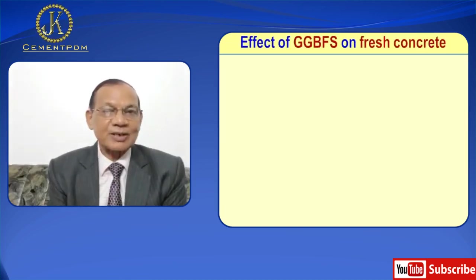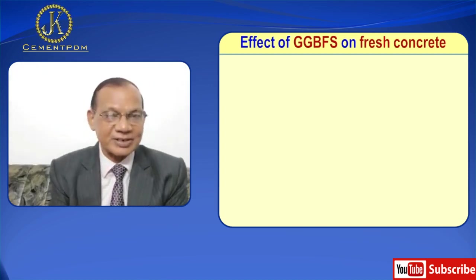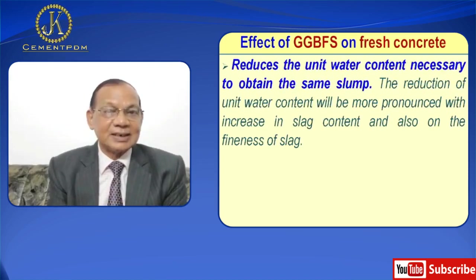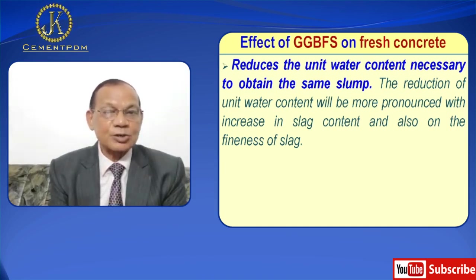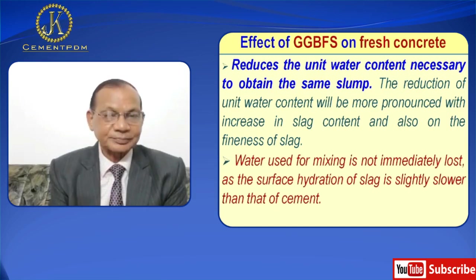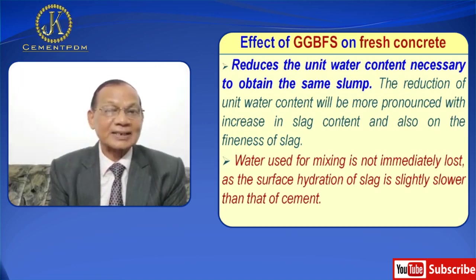Effects of ground granulated blast furnace slag on fresh concrete: it reduces the unit water content necessary to obtain the same slump. The reduction of unit water content will be more pronounced with increasing slag content and also with the fineness of slag. Water used for mixing is not immediately lost, as the surface hydration of slag is slightly slower than that of cement.